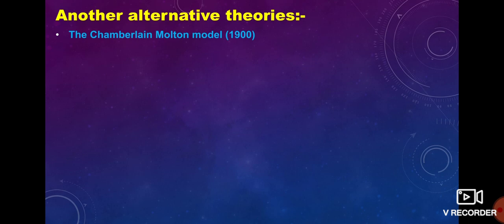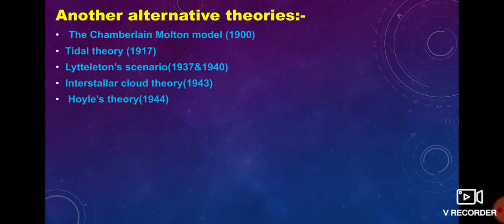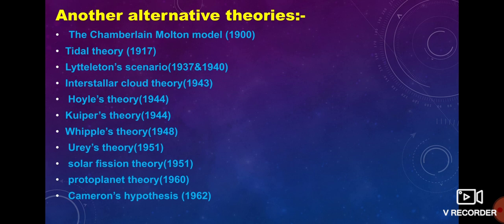These alternative theories include: the Chamberlin-Moulton model, the tidal theory, the late accretion scenario, the interstellar cloud theory, Hoyle's theory, Kuiper's theory, the bipolar outflow theory, Urey's theory, the solar fission theory, the protoplanet theory, Cameron's hypothesis, and the capture theory.